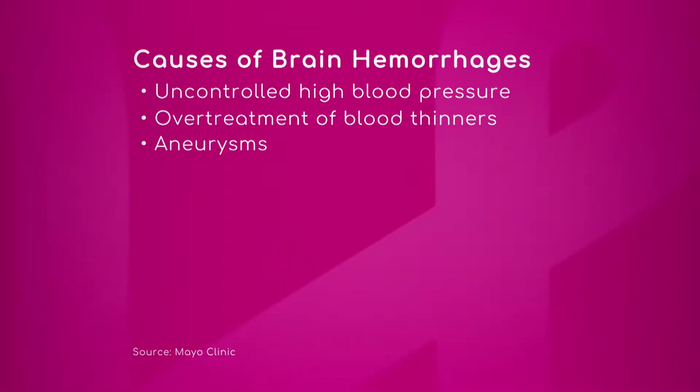When you compare hemorrhagic stroke to ischemic stroke, ischemic stroke is the most common. Of all strokes in the United States — probably about 800,000 a year — about 80 to 85 percent are the ischemic type. So the hemorrhagic type is really only about 15 to 20 percent of those strokes. That's the split.